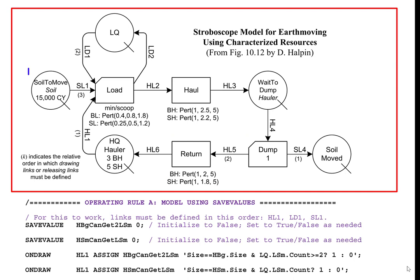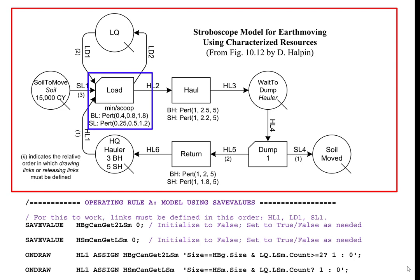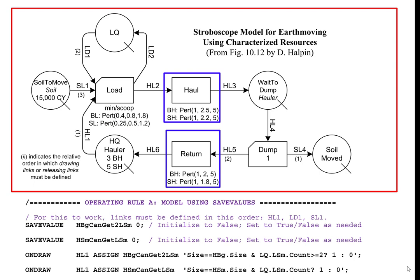The amount of soil to move from the queue 'soil to move' is 15,000 cubic yards. The durations of activities are written underneath their nodes. These durations differ depending on the equipment used. The time to load one scoop depends on whether the loader is a big or small loader. The distributions are both PERT. The time to haul and return depend on whether the hauler is big or small. The time to dump is the same: one minute.